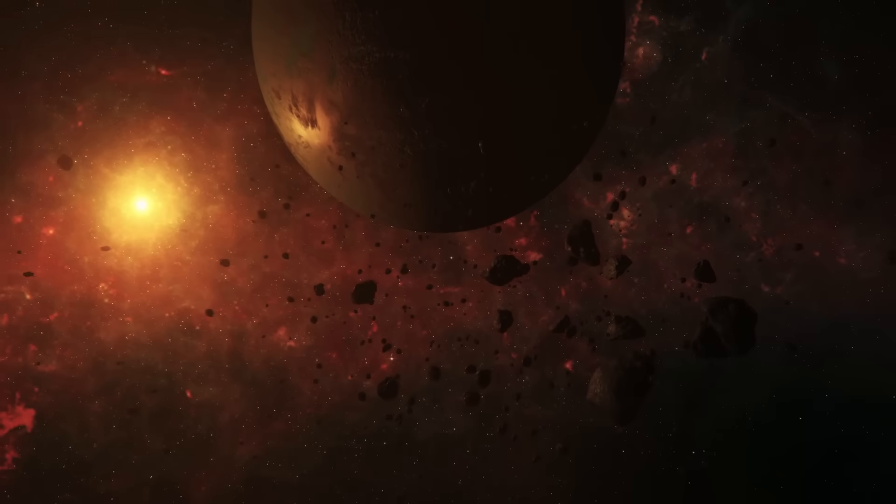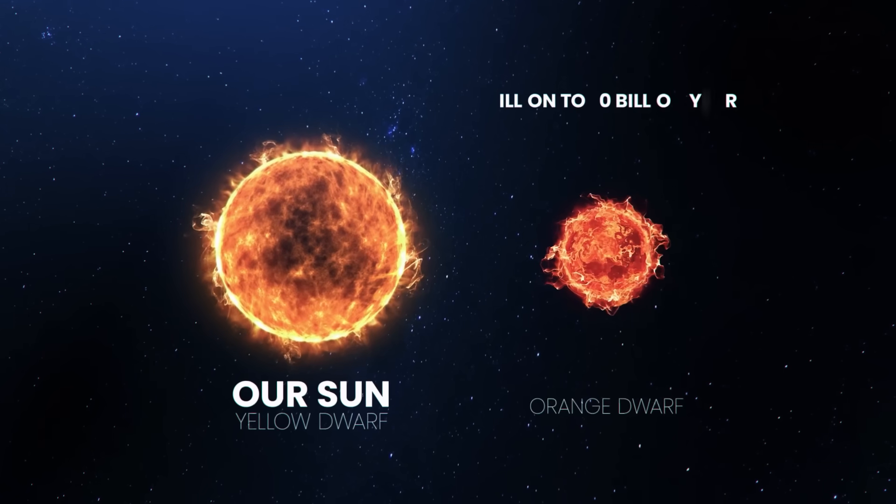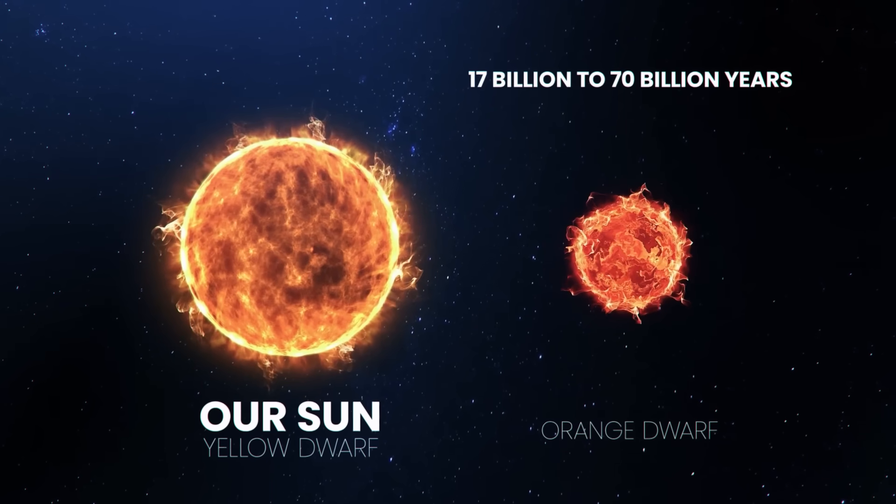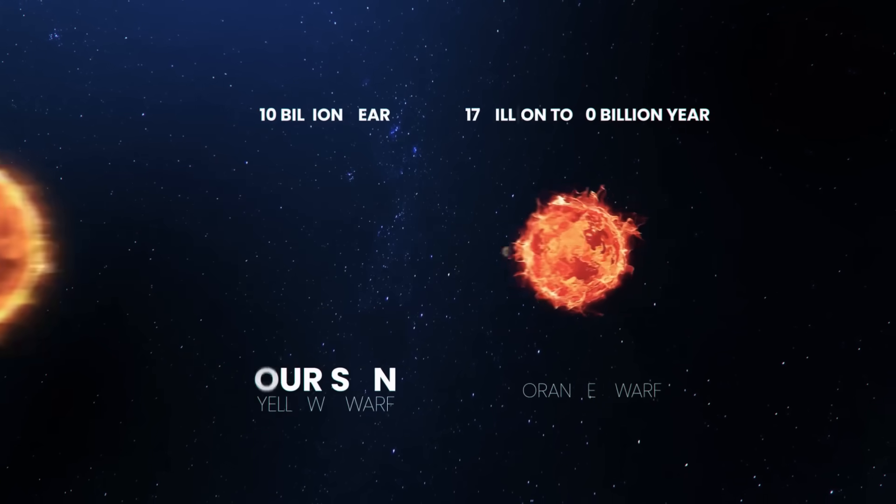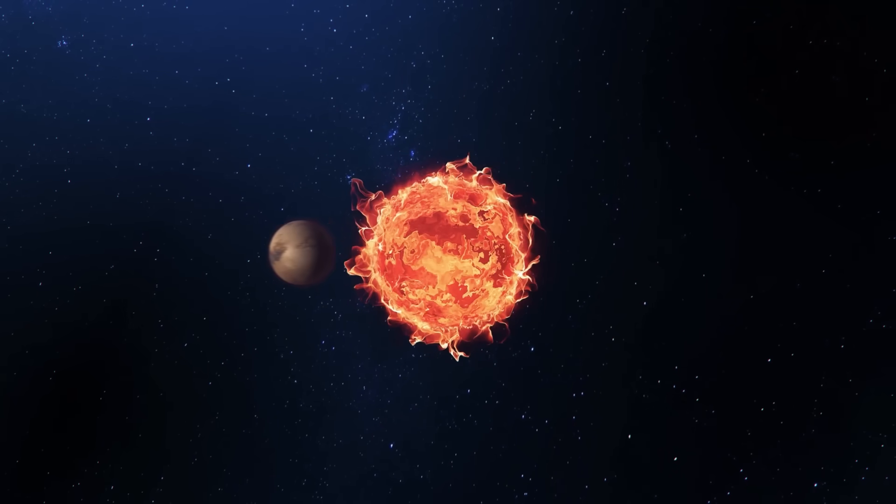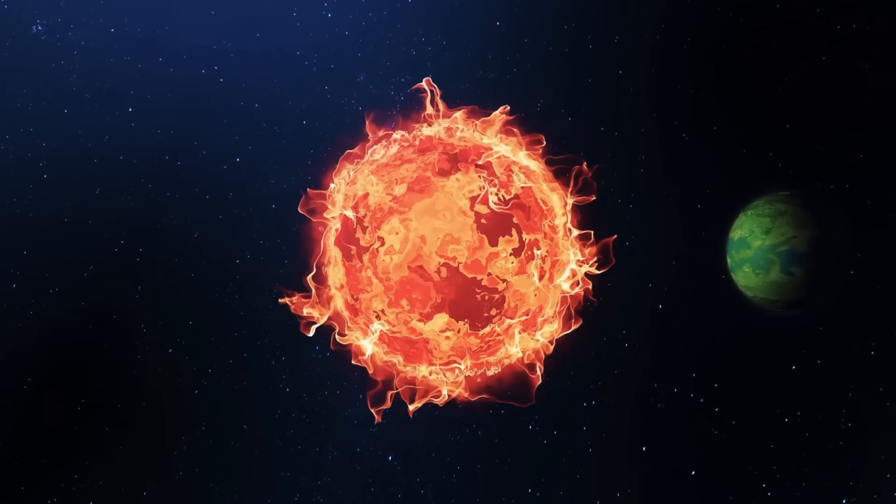While these Sun-like stars might not sound ideal for life, they have a big advantage. Their lifetimes are anywhere from 17 billion to 70 billion years, compared to the 10 billion year lifespan of our Sun. If life started on a planet orbiting a K-star, life would have had much more time to evolve than life on Earth has so far.